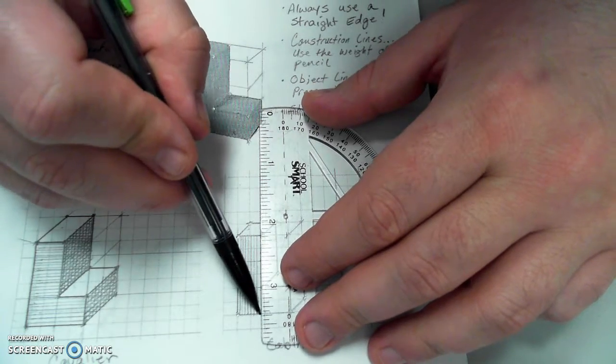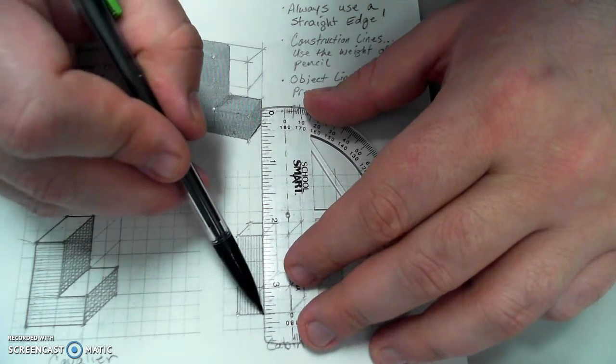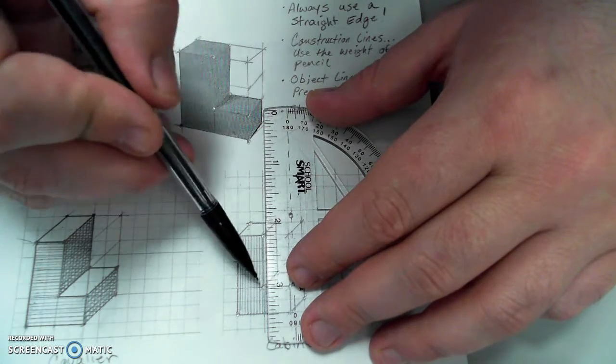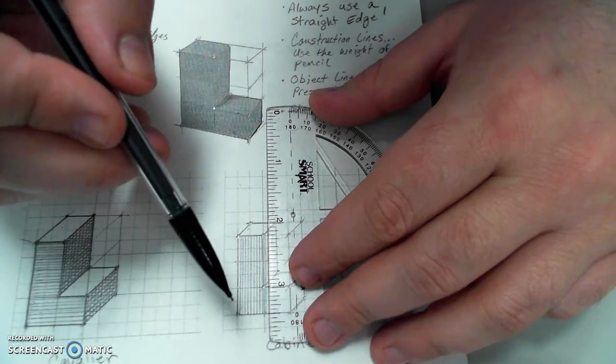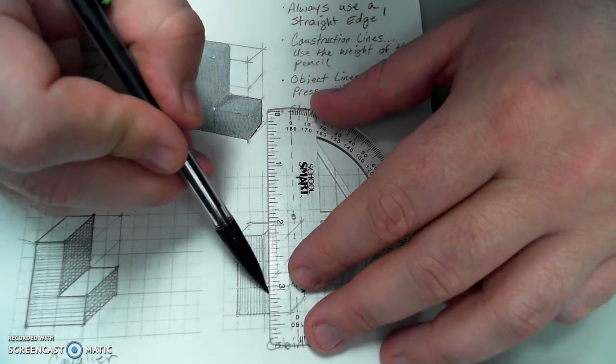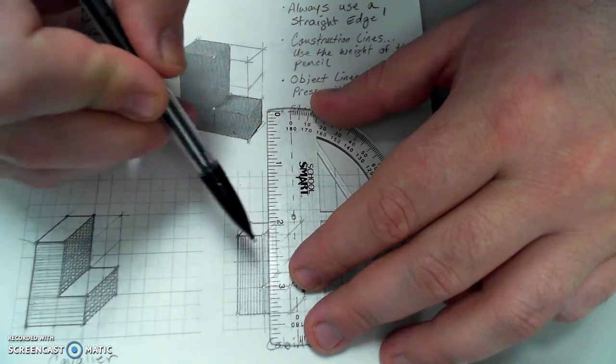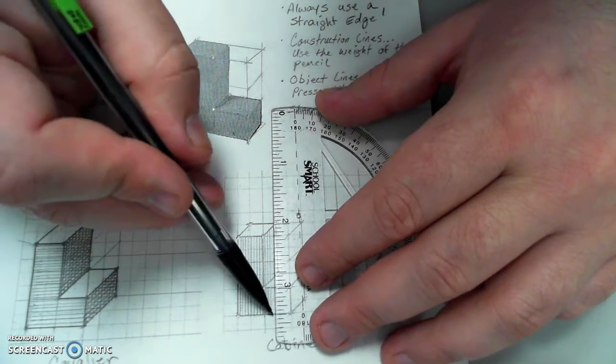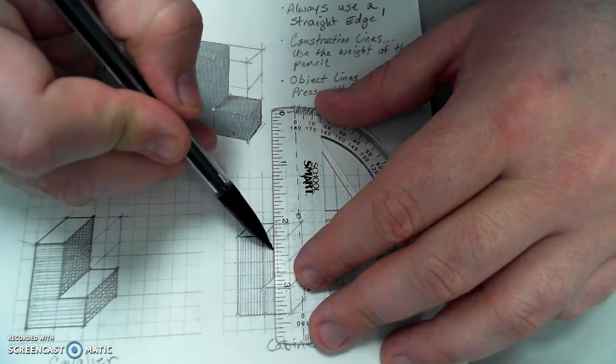Again, the spacing matters. The closer they are, the darker it's going to look. The further apart they are, the lighter it will look. And the more like an edge they will look. Skip over this top face. Trying to stay parallel to my vertical lines.